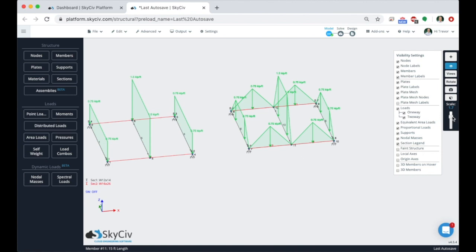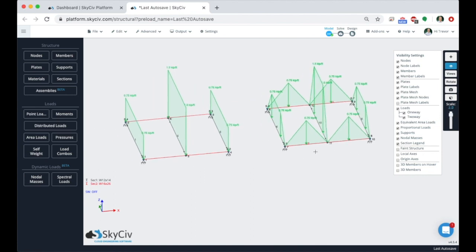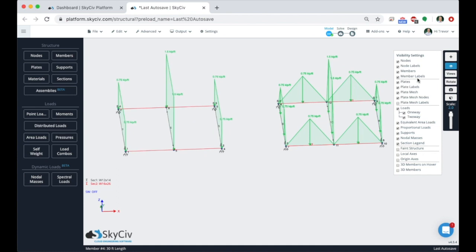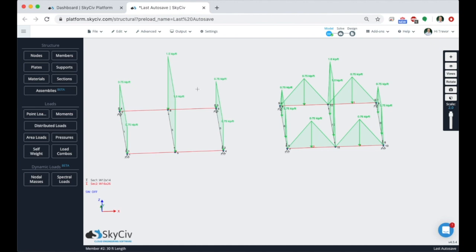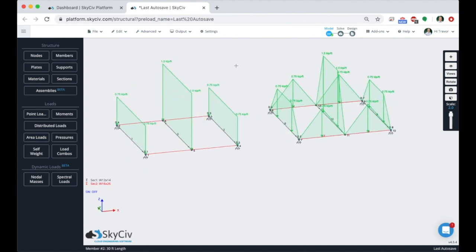And I've turned the scale up to exaggerate it a little bit, but we can see that it's following the tributary width lines that we drew on the whiteboard. So on the one-way case here, we have half of the loads are on the middle and half the load is on either beam here.